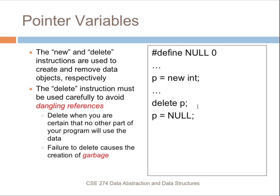We use the delete operation by saying delete P, and then to make things complete we also set P equal to null so that we can check later whether P is actually pointing to anything. If it isn't, then we know we don't want to do any operations on that piece of memory.